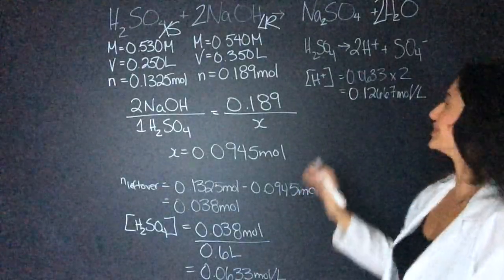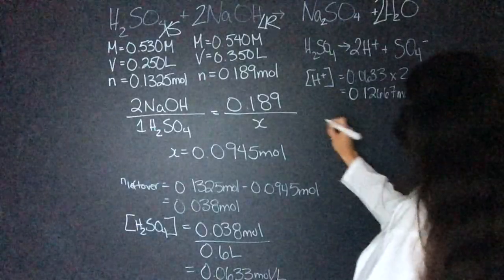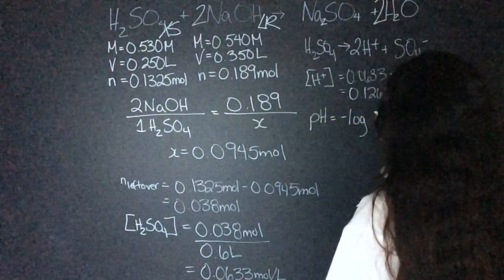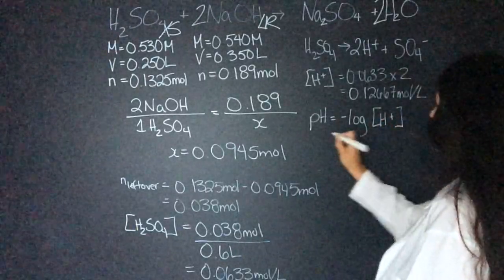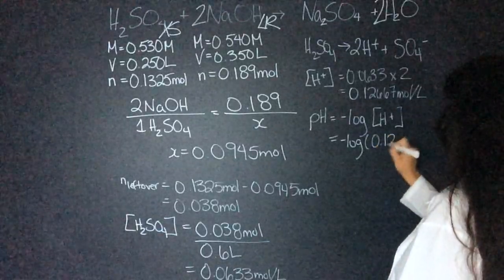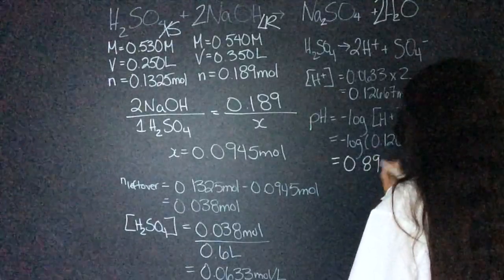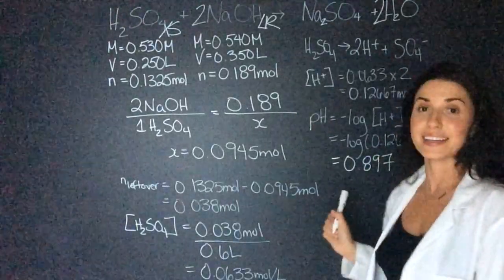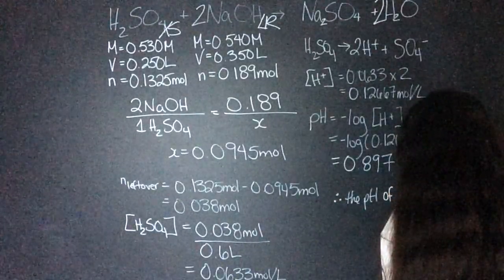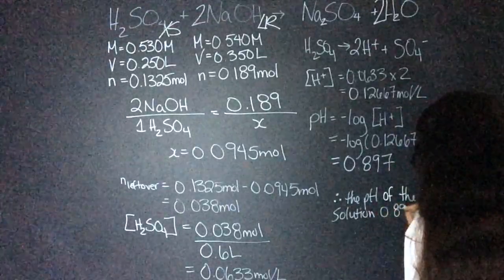Now I can use that hydrogen ion concentration to find the pH. So pH equals the negative log times the concentration of hydrogen. So pH equals 0.897. And that is our final answer. Therefore, the pH of the solution is 0.897.